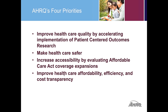The second priority is to make healthcare safer. The components of this are to prevent healthcare-associated infections, accelerate patient safety improvements in hospitals and ambulatory settings, reduce harm associated with obstetrical care, improve safety, reduce medical liability, and accelerate patient safety improvements in nursing homes.